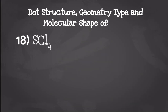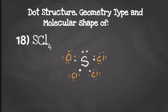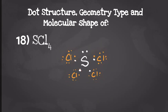For our last one we have sulfur tetrachloride. Sulfur is going to have six valence electrons and each chlorine is going to have seven. So when we draw our dot structures it should look something like this. Sulfur is going to be able to have more than eight valence electrons because it's in the third period or lower, and each chlorine is going to have eight valence electrons. We have one center atom attached to four other things — we can't forget that lone pair. It's going to give us a geometry type of AB4E, which gives us a molecular shape of seesaw.